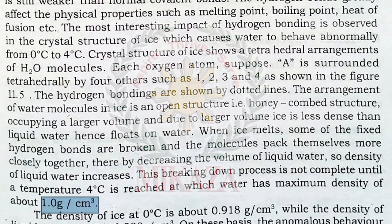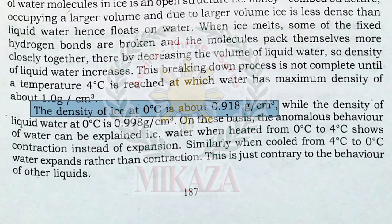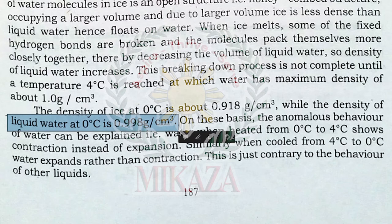The density of ice is about 0.918 grams per centimeter cube, while the density of liquid water at 0 degrees Celsius is 0.998 grams per centimeter cube.